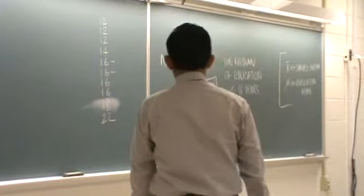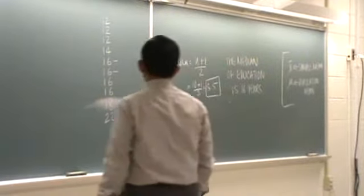So 154 divided by how many numbers we have? 10, 10 subjects. So the average years of education for 10 people is 15.4 years, that's all.